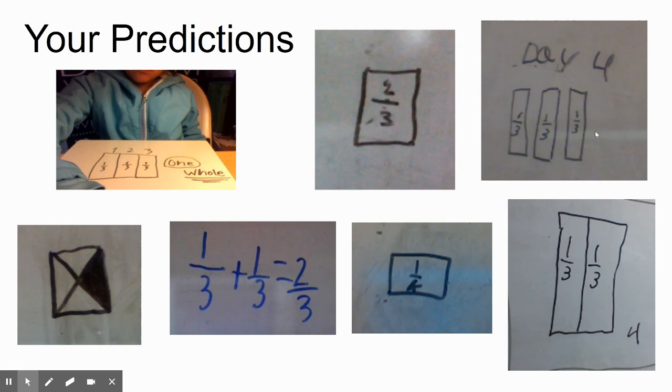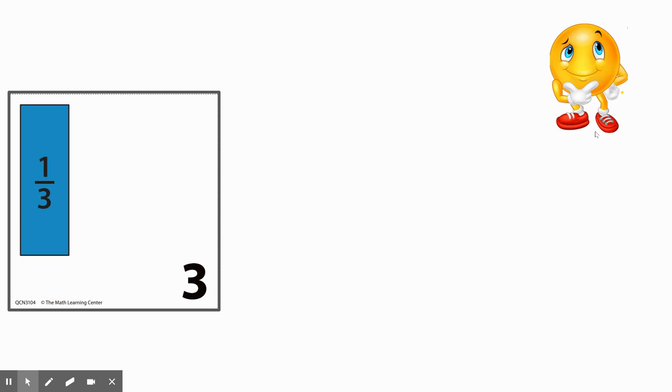I also noticed some people thinking about one-fourth, because there was that pattern where you have a half, then you would have a third, and then maybe we're going to have a fourth. So a lot of good thinking in all of these. Let's see. What do you think it's going to look like?